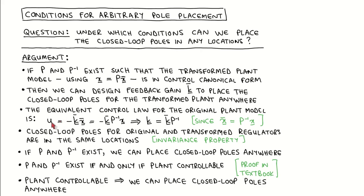The plant input u is then calculated according to the control law as minus k bar times x bar, which we can write in terms of the original state vector using the transformation equation. The state feedback gain for the original plant is then k bar times P inverse. Since the inputs to both the original and the transformed plant model are equivalent, the behavior of both regulators will be the same, and the poles of both systems will be in the same locations. We can therefore conclude that if an invertible transformation matrix P exists that transforms the plant to the control canonical form, we can place the closed loop poles anywhere.